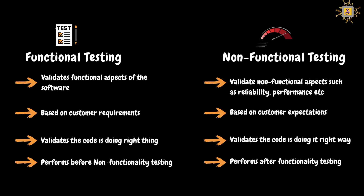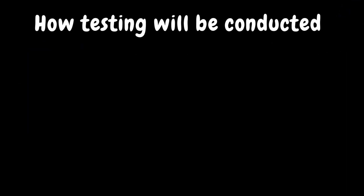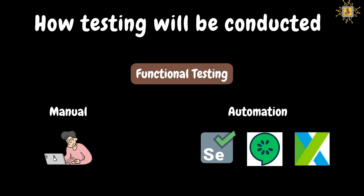Now let's discuss how testing will be conducted by the teams. In functional testing, all testing activities will be carried out in two ways: manual and automation. In manual testing, the tester manually browses through all the functionalities of the software and reports all the bugs. In automation, testing will be carried out using tools — testers will set up a framework and create test scripts that automate user actions. Some commonly used automation tools are Selenium, Cucumber, and Katalon Studio. Teams will choose a specific tool that meets their requirements and budget.